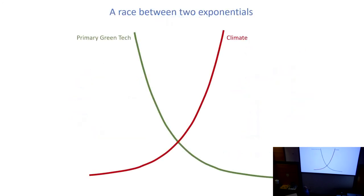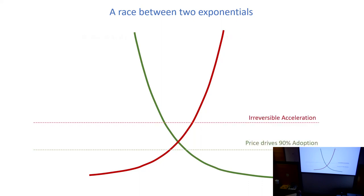Here we are - we've got these two exponentials squaring off against each other. I'm using climate as an example but there are other exponentials we face. The question is who wins out of this race, and it is a race.